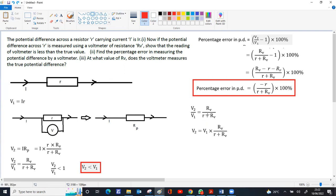So v2 equals v1 times 1 over r by rv plus 1. For v2 and v1 to be equal, v2 equals v1, which means the denominator must equal 1. Therefore, r by rv plus 1 equals 1, which means r by rv must equal 0.